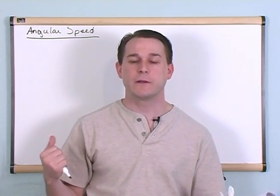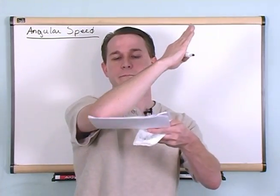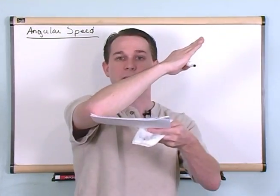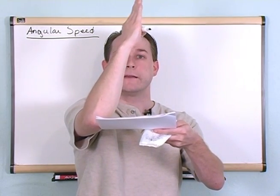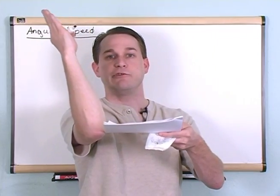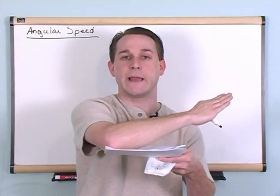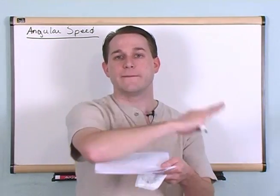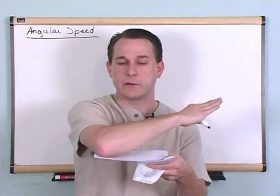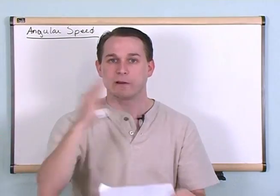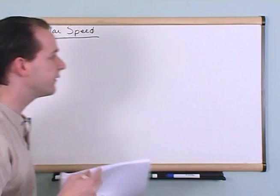Angular speed is simply a measure of how an angle changes over time. Here is an angle — my hand with respect to this paper. This is an angle. It's not moving; it's a constant angle. Now if I start to move, this angle is changing, and it's changing with so many degrees per unit time or so many radians per unit time. If I move my hand faster, the angular speed is faster. If I move my hand slower, the angular speed is much slower. It's the same thing as linear speed — just dealing with angles instead of distance.